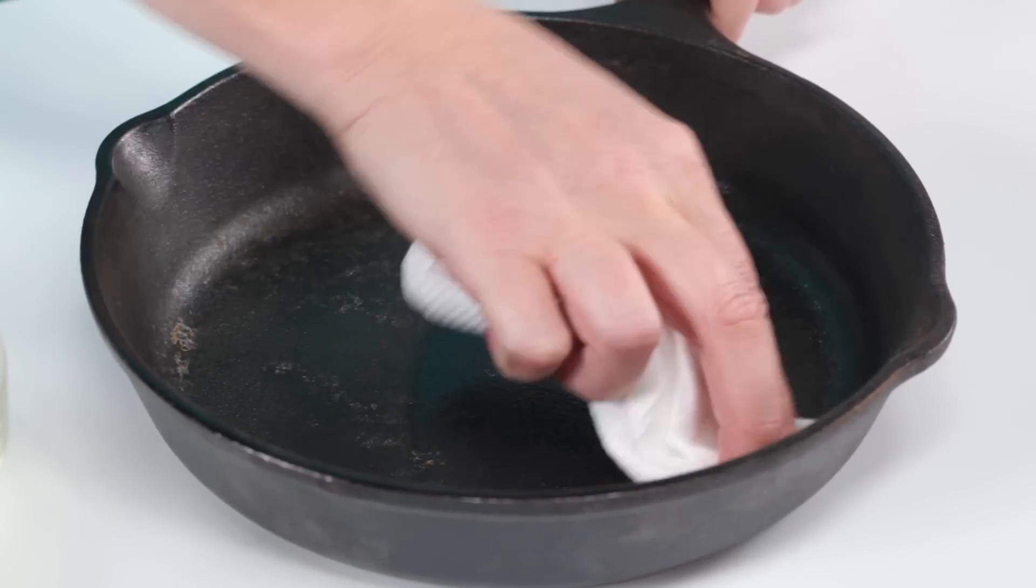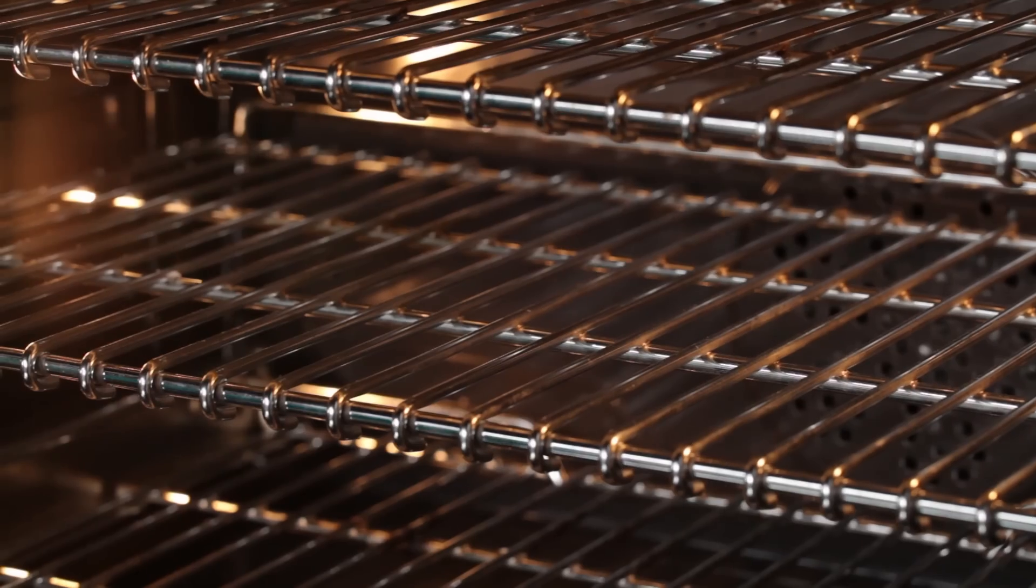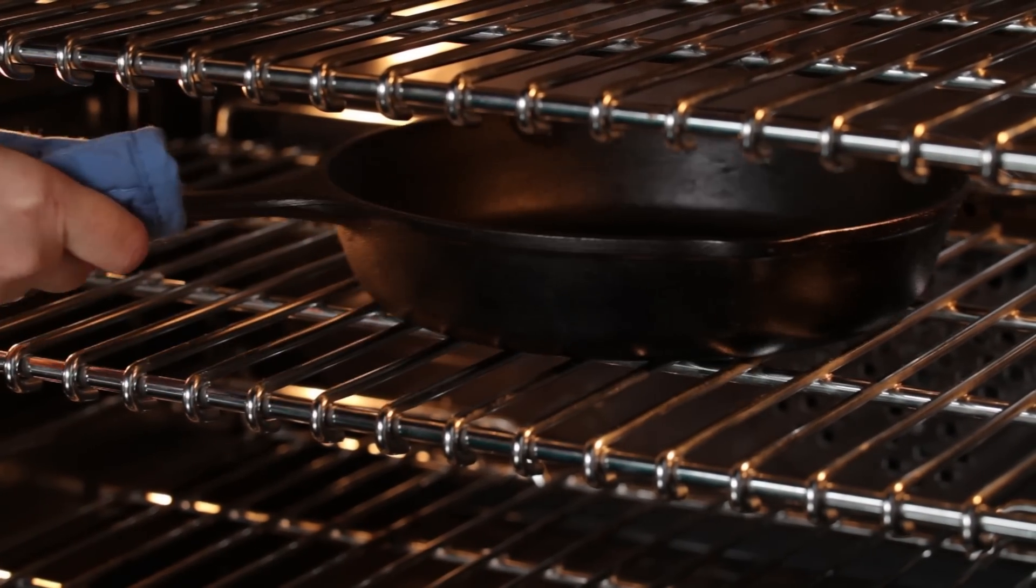due to old age or accidentally running it through the dishwasher, here's how. Start by rubbing the entire pan with vegetable oil, even the handle. Then place the pan in a 350-degree oven for two hours and remove the pan